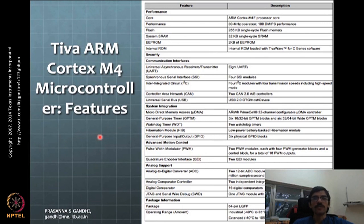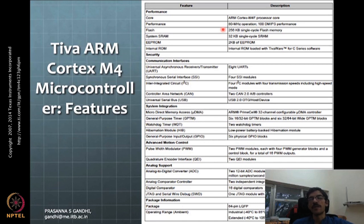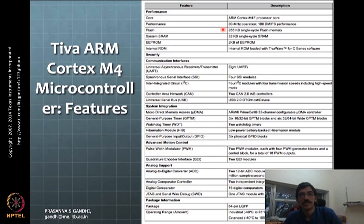Now, looking at the Tiva ARM Cortex microcontroller features, the data sheet is given in a certain format with a block diagram to explain things in more detail. It has 80 megahertz operation — 80 megahertz means your clock is running at that frequency. Depending on the length of your program or number of clock cycles your program may take, you can determine your sampling time.